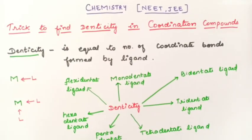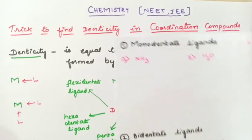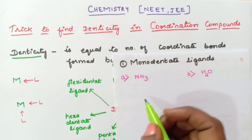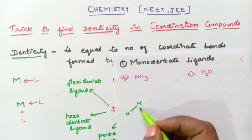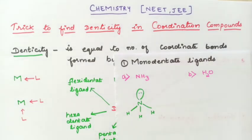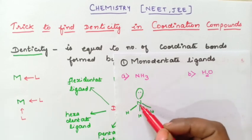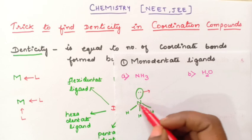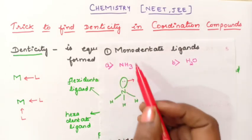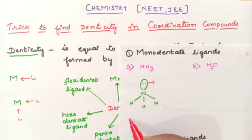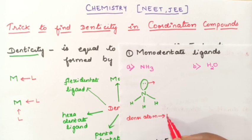Now let us take examples and try to understand. The first example is for monodentate ligand: ammonia (NH3). You can write the structure as N with three hydrogens, and one lone pair of electron is present. Using this lone pair, nitrogen can form a coordinate bond with the central metal atom — only one bond. That is why it is called a monodentate ligand. The donor atom here is nitrogen.